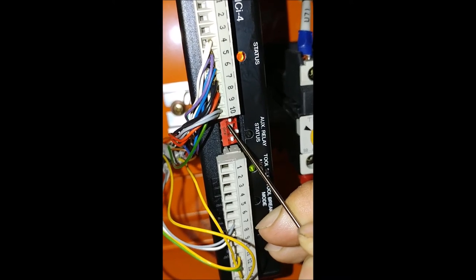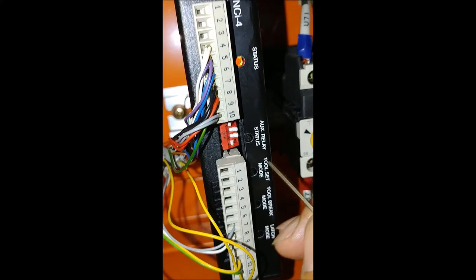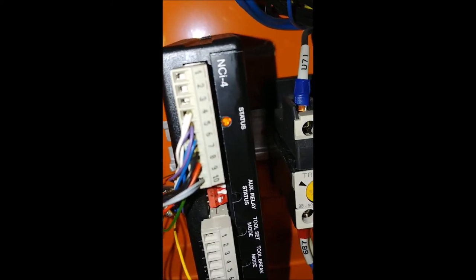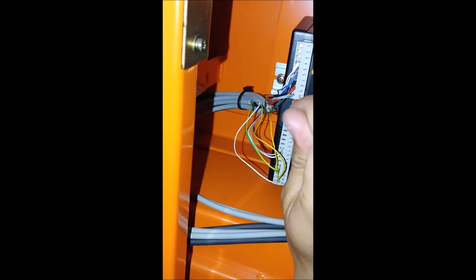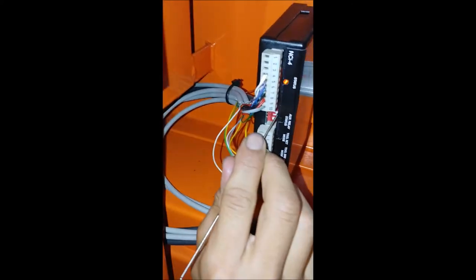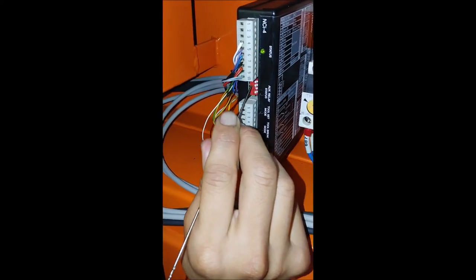Using a small flat head screwdriver, flip switch number two. Wait for a few seconds, then flip switch number two back to its original position. The status LED should now be a steady green light. The laser is now ready for tool setting again.